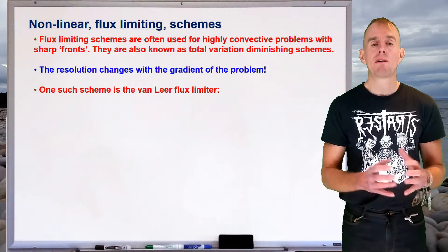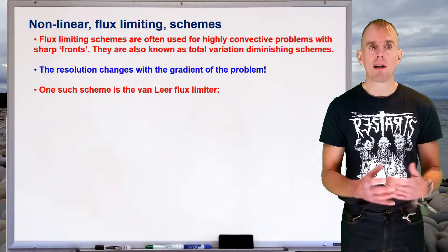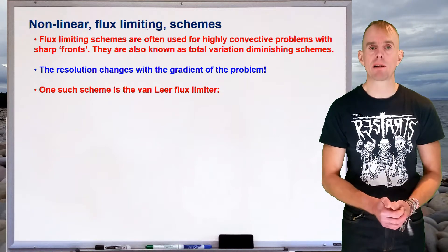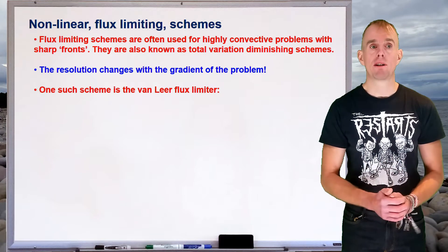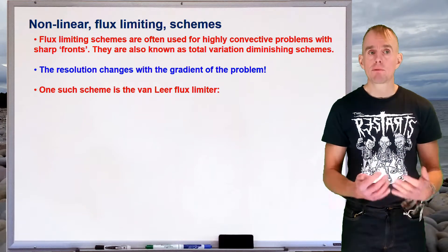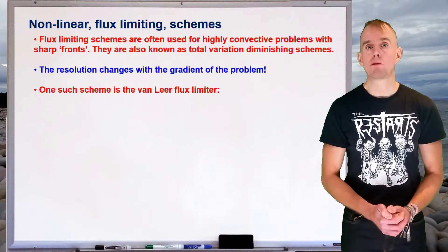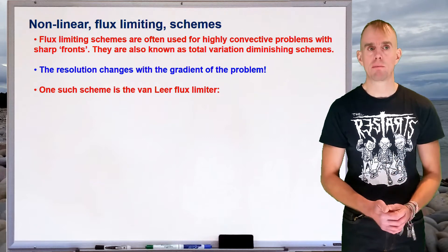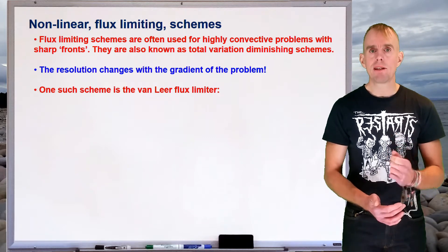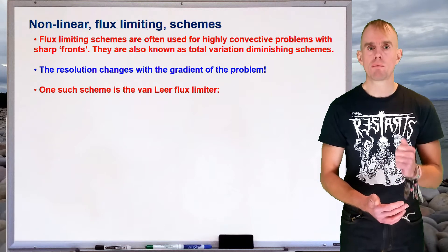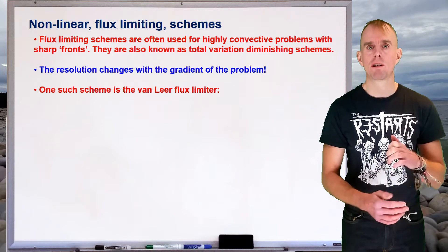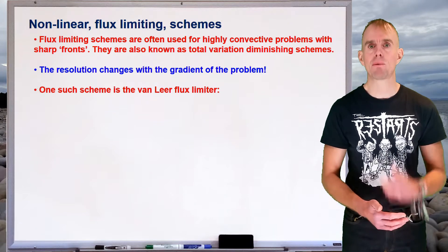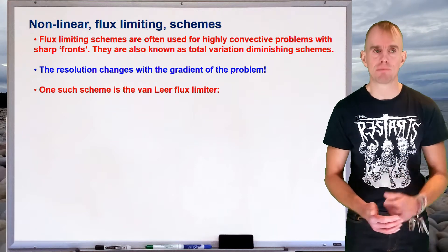Flux limiting schemes are very often used for highly convective problems with sharp fronts, hence shock waves in aerodynamics and phase boundaries within two-phase flow. You'll find that flux limiting schemes also go by another name, which are total variation diminishing schemes. The key to these schemes is that the resolution with which they discretize the problem actually changes with the gradient of the problem.